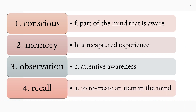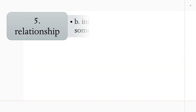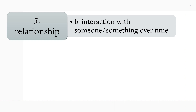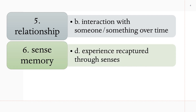Number 4: Recall is A — to recreate an item in the mind. Number 5: Relationship is B — interaction with someone or something over time. Number 6: Sense Memory is D — Experience Recaptured Through Senses.